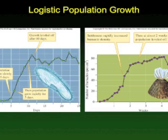Experiments carried out with protozoans in the lab and barnacles have shown that populations of these species follow the logistic curve as they reach resource limitations and level off.